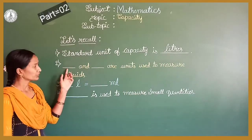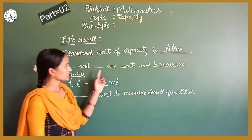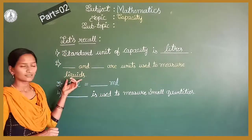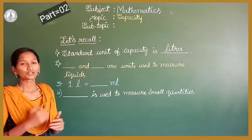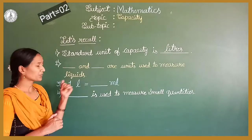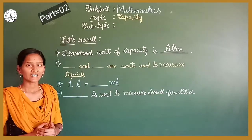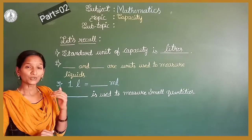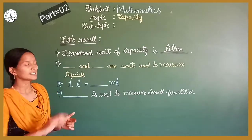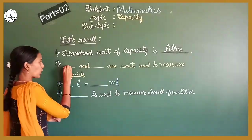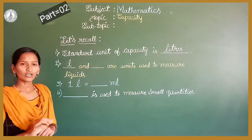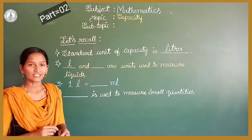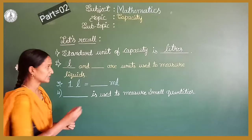Now come to the second question. Dash and dash are the units to measure the liquids. Which are the two units to measure the liquids? That is litre and millilitre. The short form of litre is small 'l' and the short form of millilitre is small 'm' and small 'l'.